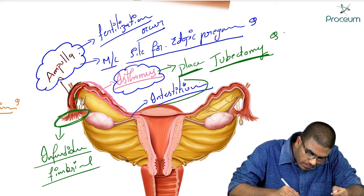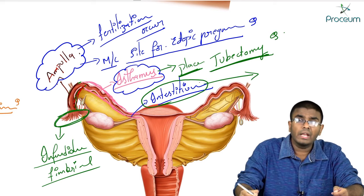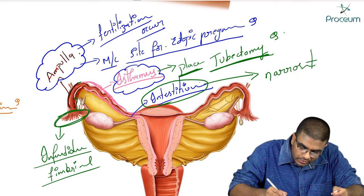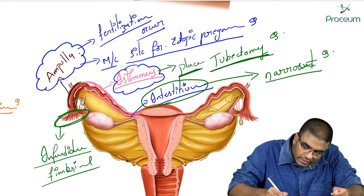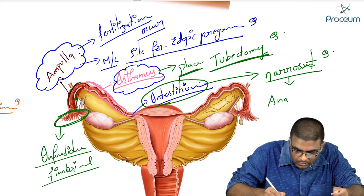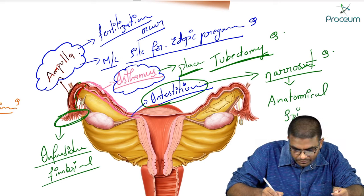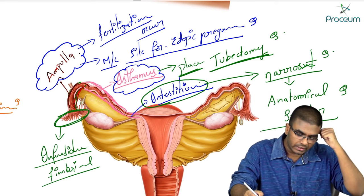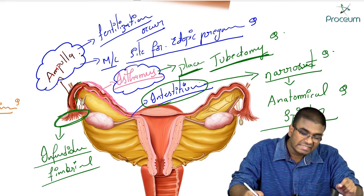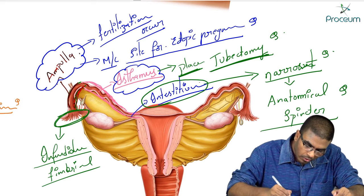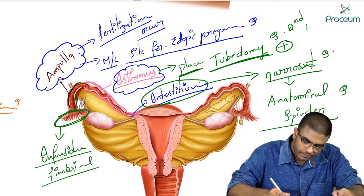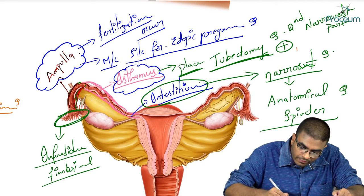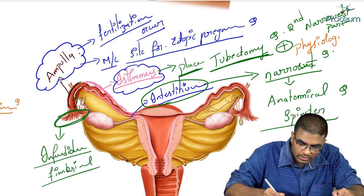Regarding the interstitium: the interstitium is the narrowest part of the entire fallopian tube, and it acts as an anatomical sphincter. The second narrowest part in the fallopian tube is the isthmus, which acts as a physiological sphincter.